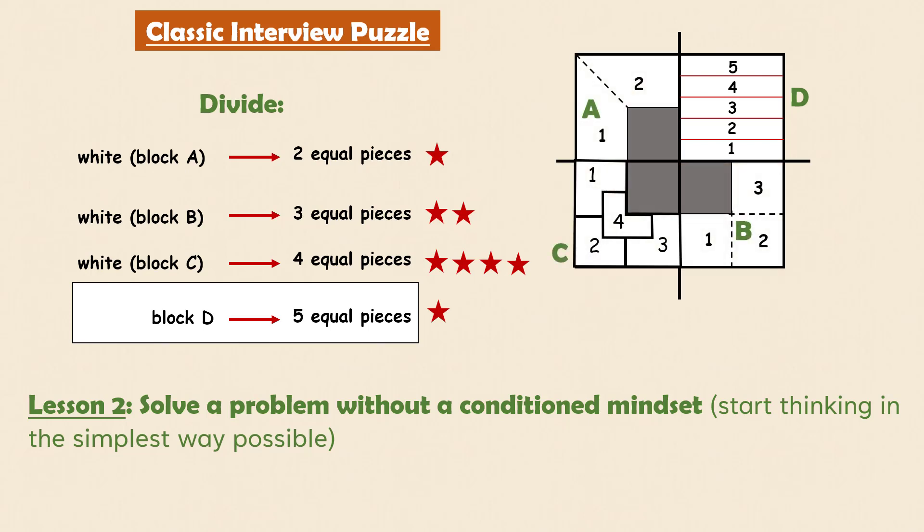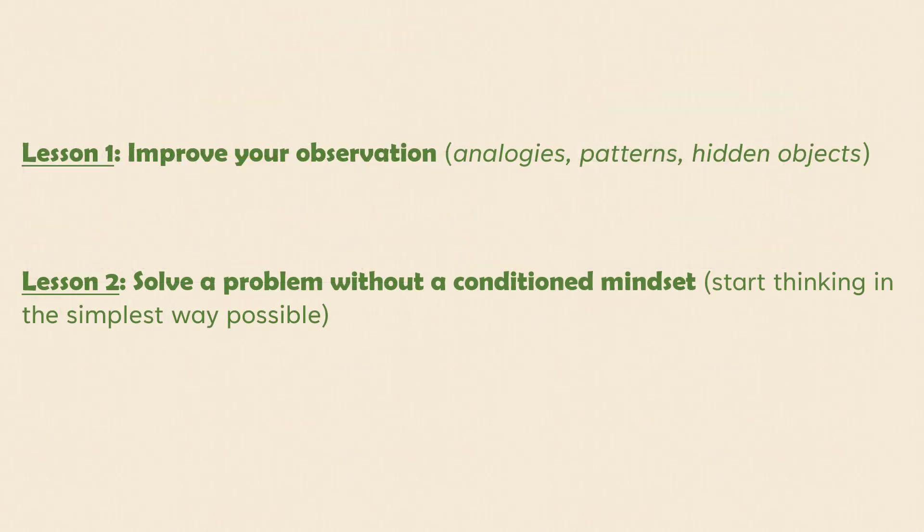The three blocks A, B and C had irregular white areas so they required some level of thinking. But the white region of block D is simply a regular shape which can be sliced to get equal pieces. Also remember that the problem statement did not restrict you from using any tools such as scale or ruler. So that was the easiest task of all. So the main purpose of this puzzle is to share with you these two important lessons.